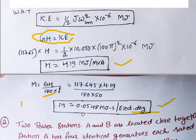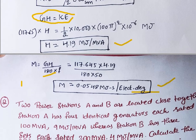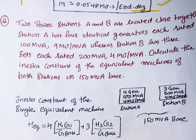So the final answer is M = 0.0548 megajoules·second per electrical degree. If you want in radians, use π instead of 180. That completes the first question.